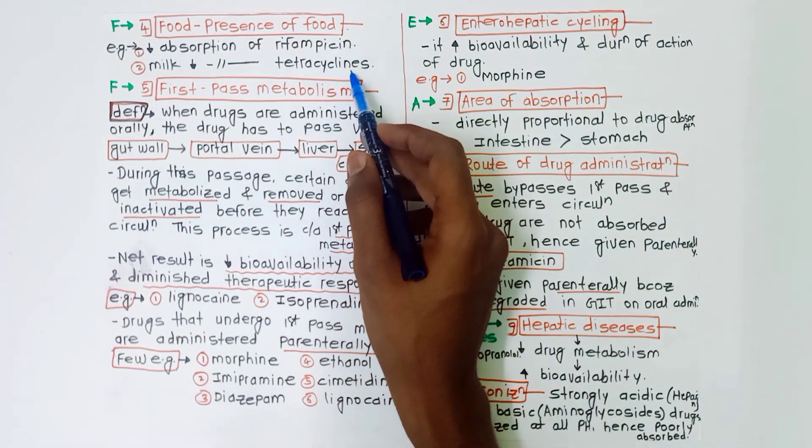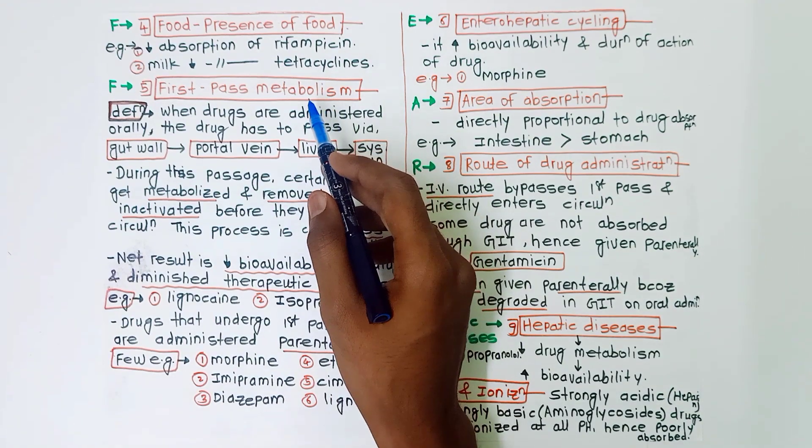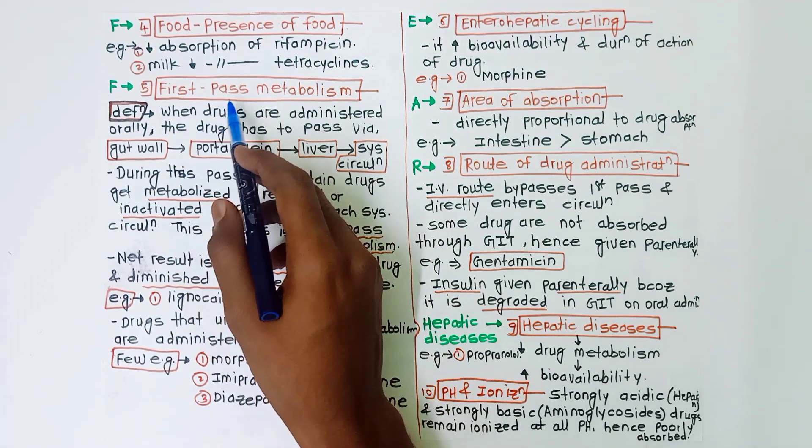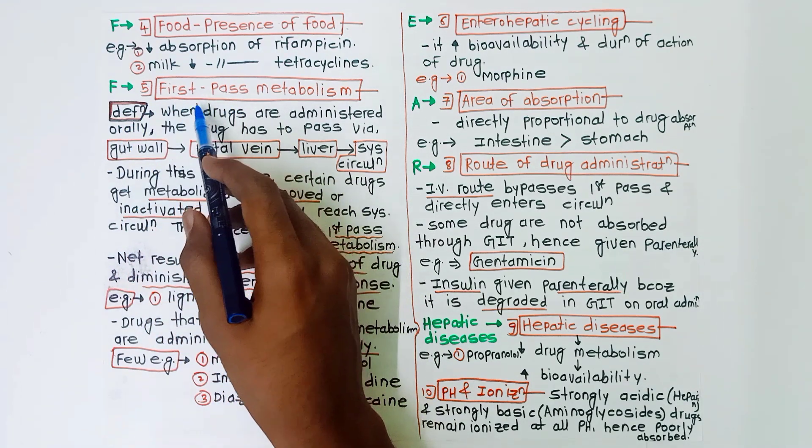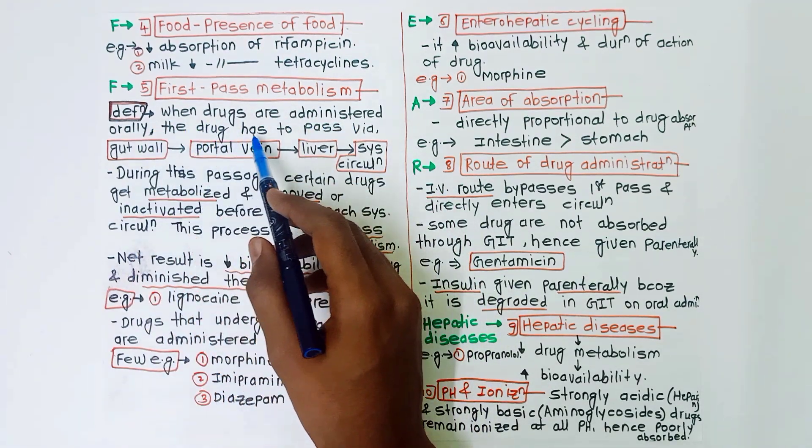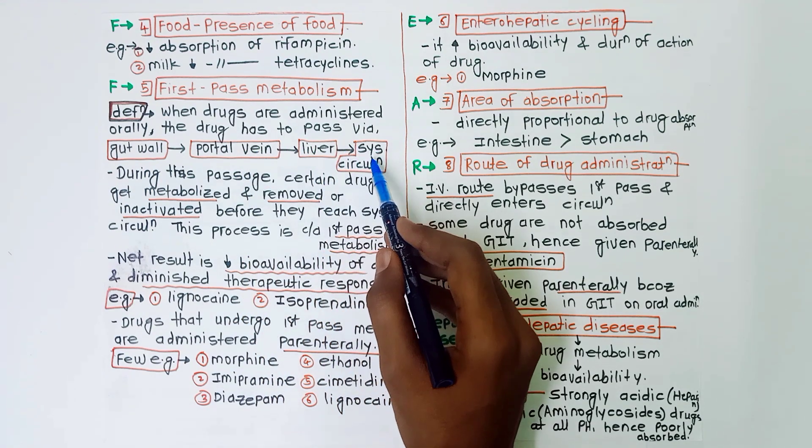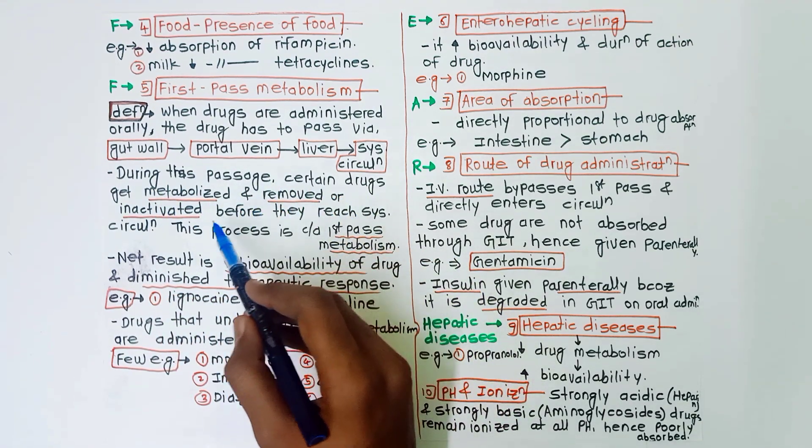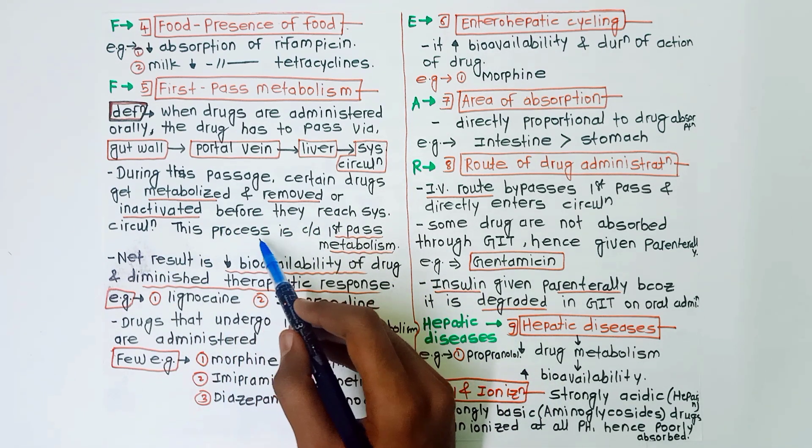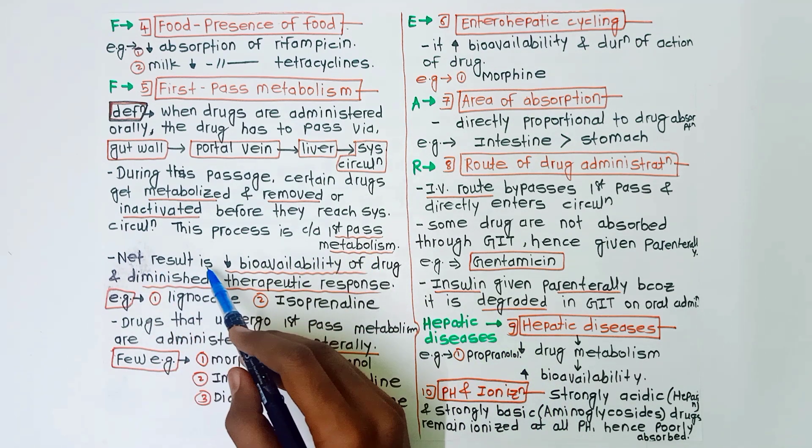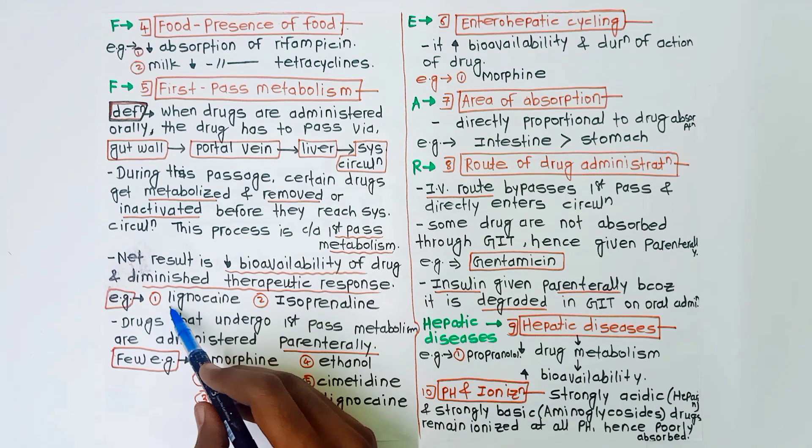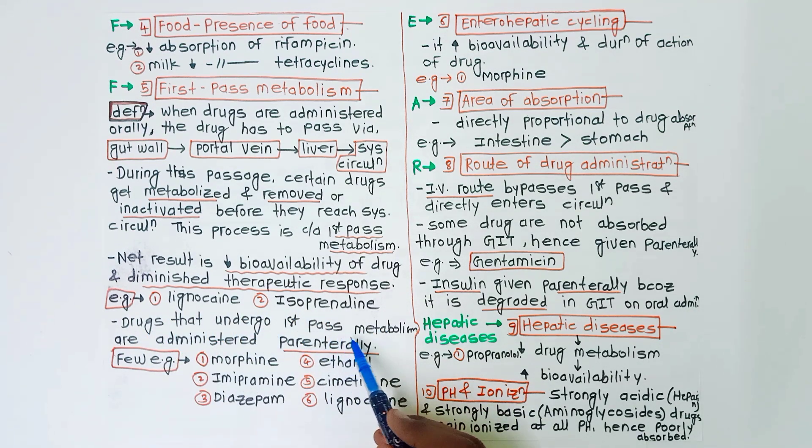Next, F for first-pass metabolism. This will be asked as a separate question, short answer question in your exams as first-pass metabolism. So this is very important, listen carefully. The definition of first-pass metabolism is: when the drugs are administered orally, the drug has to pass via gut wall, portal vein, liver, and systemic circulation. During this passage, certain drugs get metabolized and removed or inactivated before they reach the systemic circulation. This process is called as first-pass metabolism. So the net result is decreased bioavailability of drug and diminished therapeutic response. Examples of this is lignocaine and isoprenaline. Drugs that undergo first-pass metabolism are administered parenterally. Few examples of the drugs which undergo first-pass metabolism are morphine, imipramine, diazepam, ethanol, cimetidine, and lignocaine.